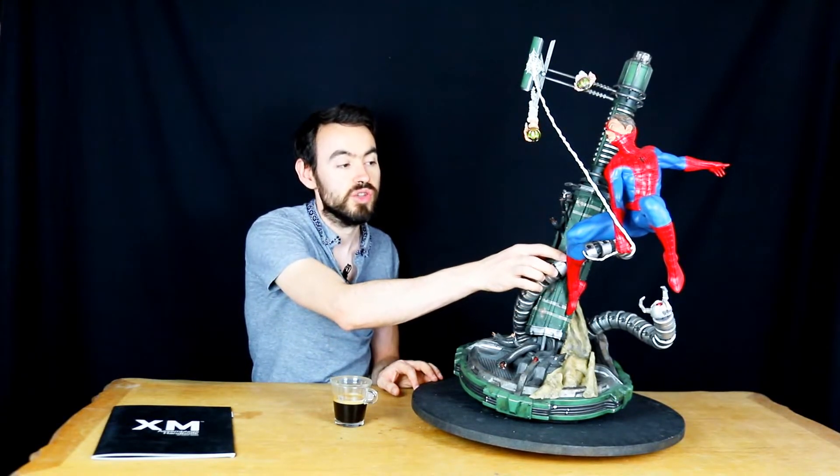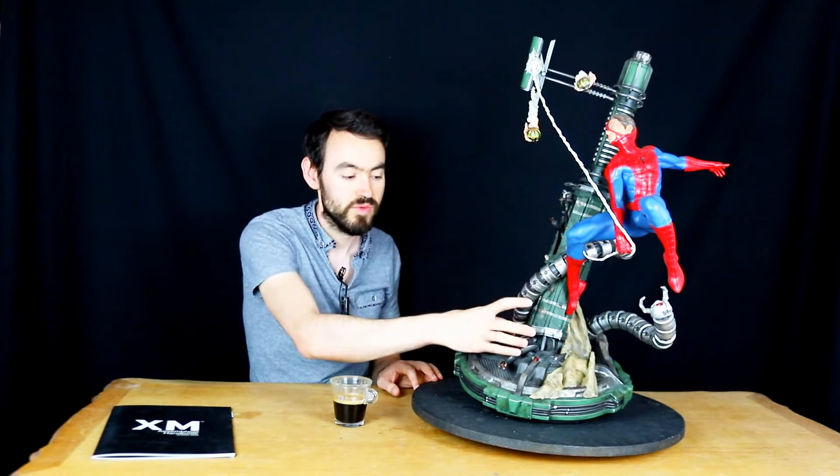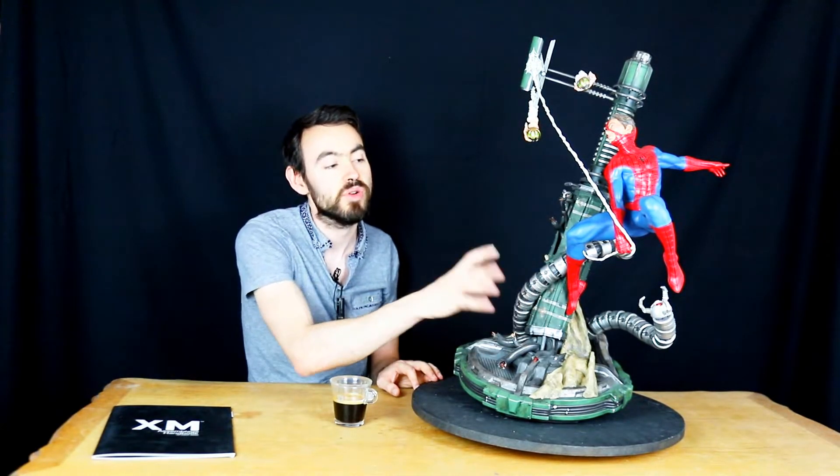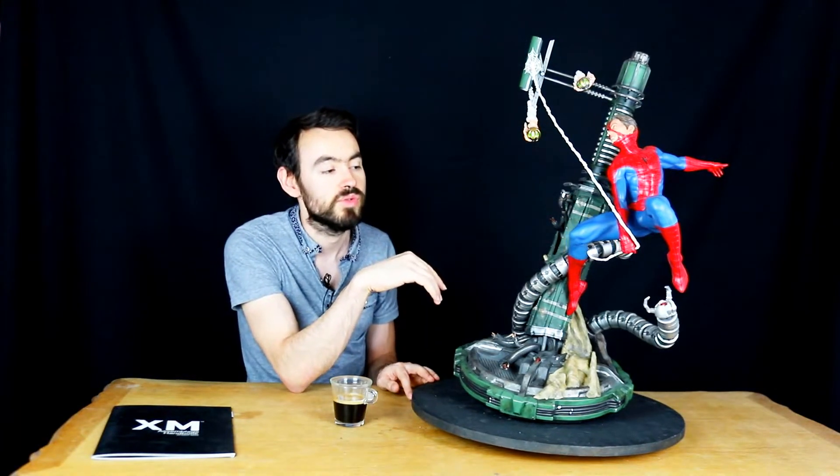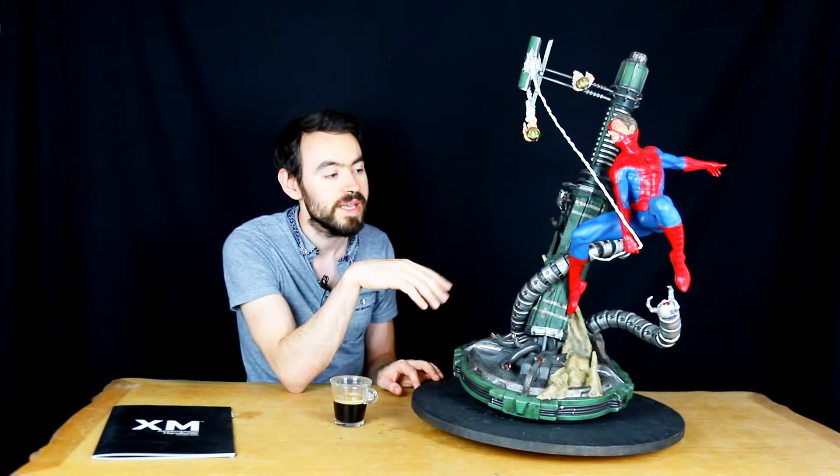Parce que vous venez plugger le bas de la tentacule dans l'énorme pilier et en fait vous clipsez en même temps le pilier et le bas de la tentacule, donc ça ne peut clairement pas bouger. Surtout avec XM, les aimants sont mortels, les emboîtements sont parfaits. Il n'y a vraiment aucun souci.